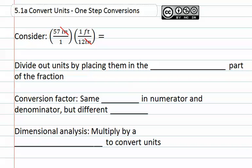This would then result in the multiplication across and we would have 57 feet per 12. When we do the division, we would find that we had 4.75 feet.